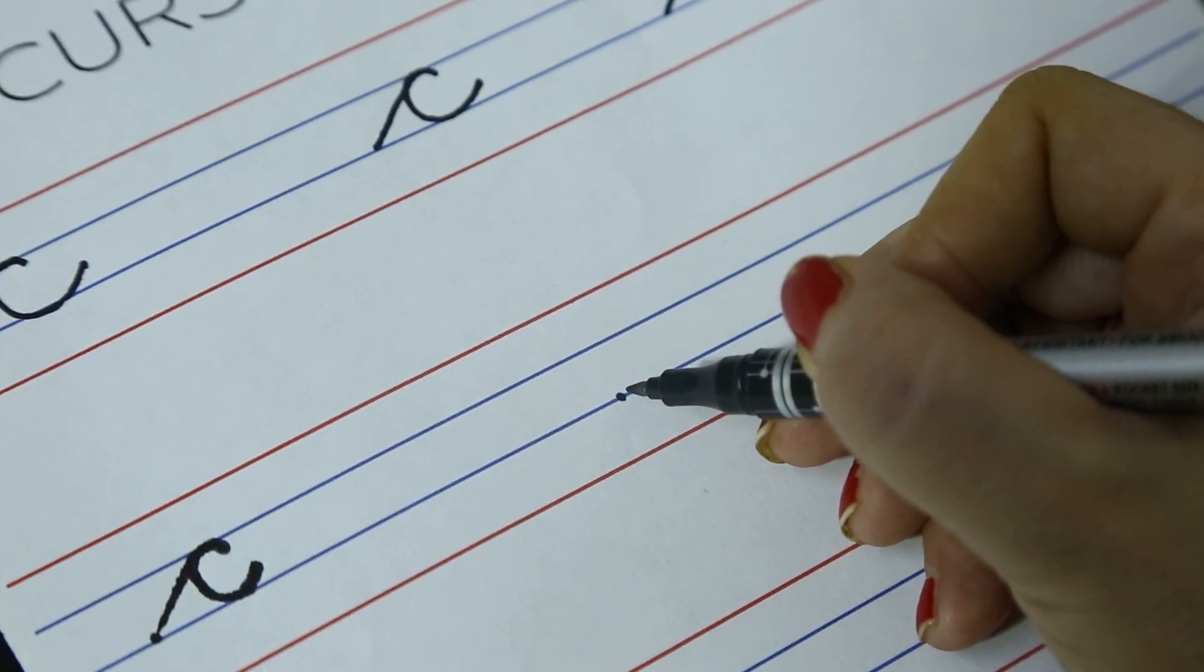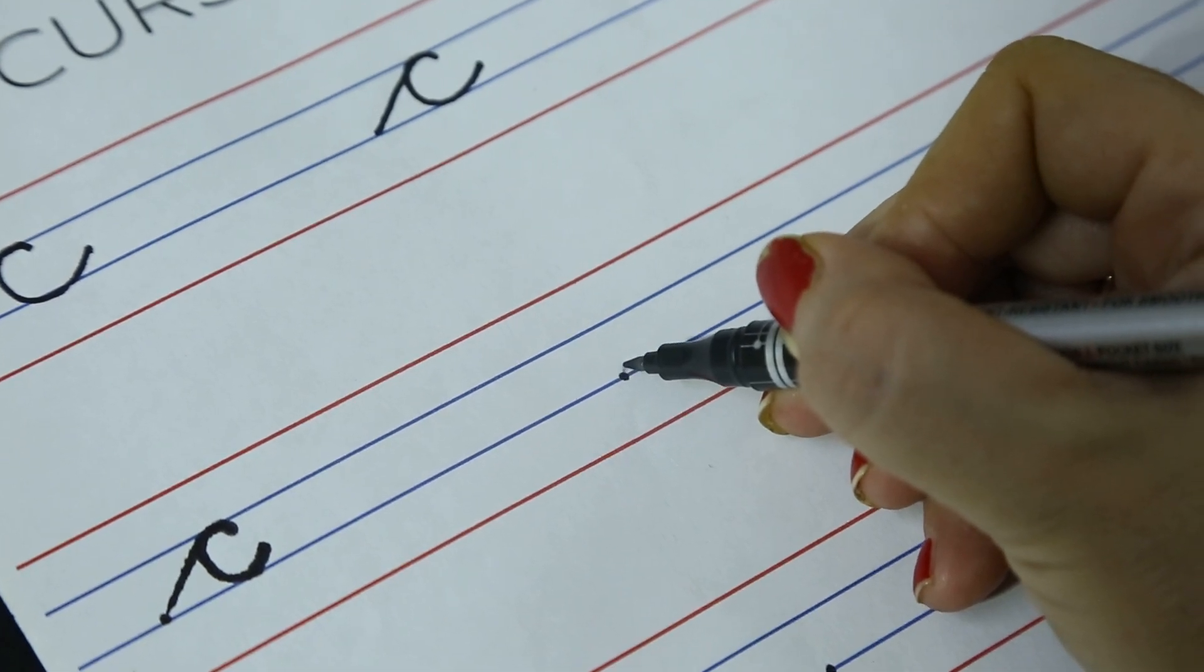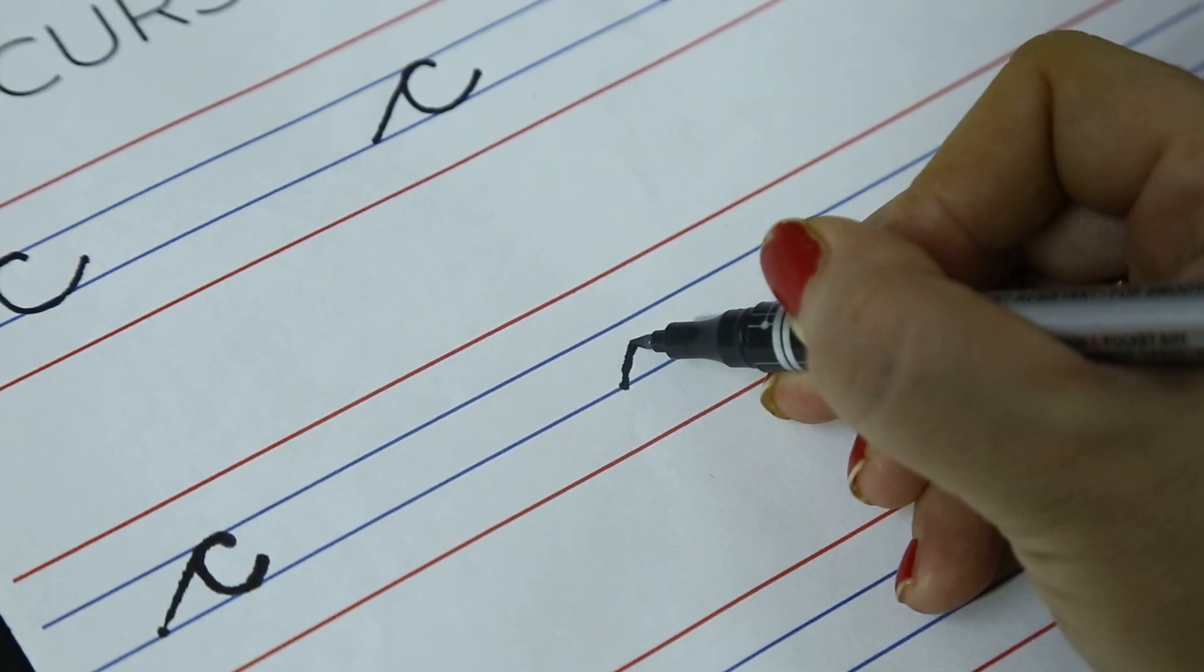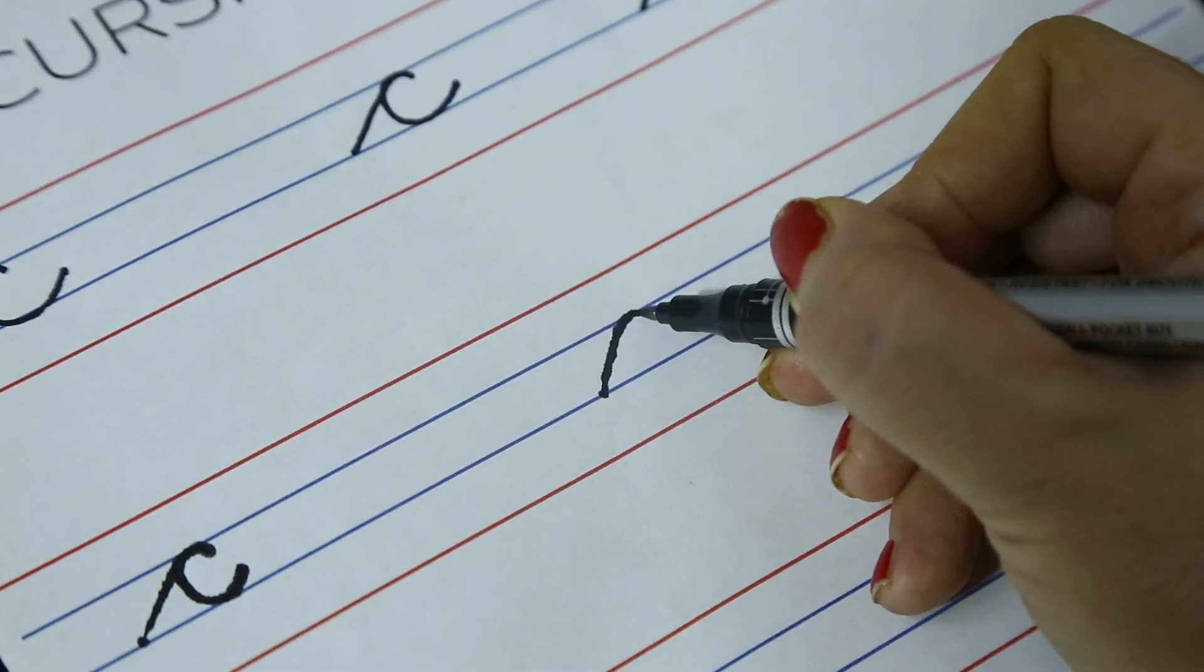Get your pencil ready on the dot, on the third blue line. Go up, up, up towards the second blue line. Make a little curve.